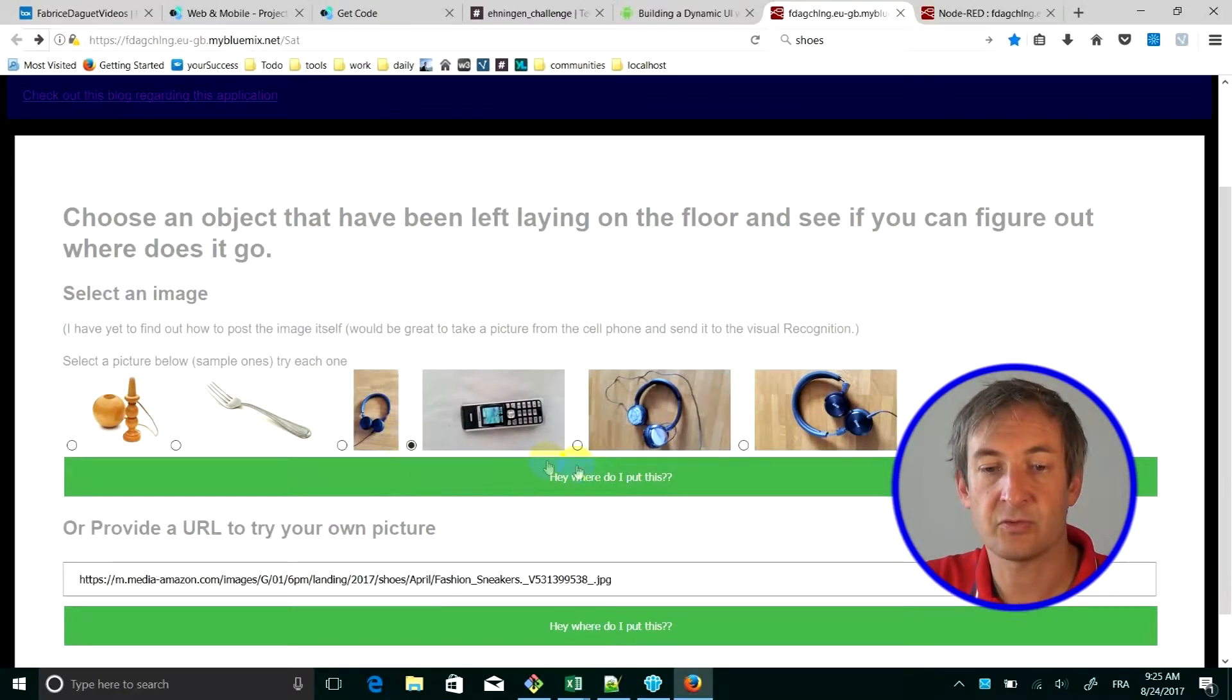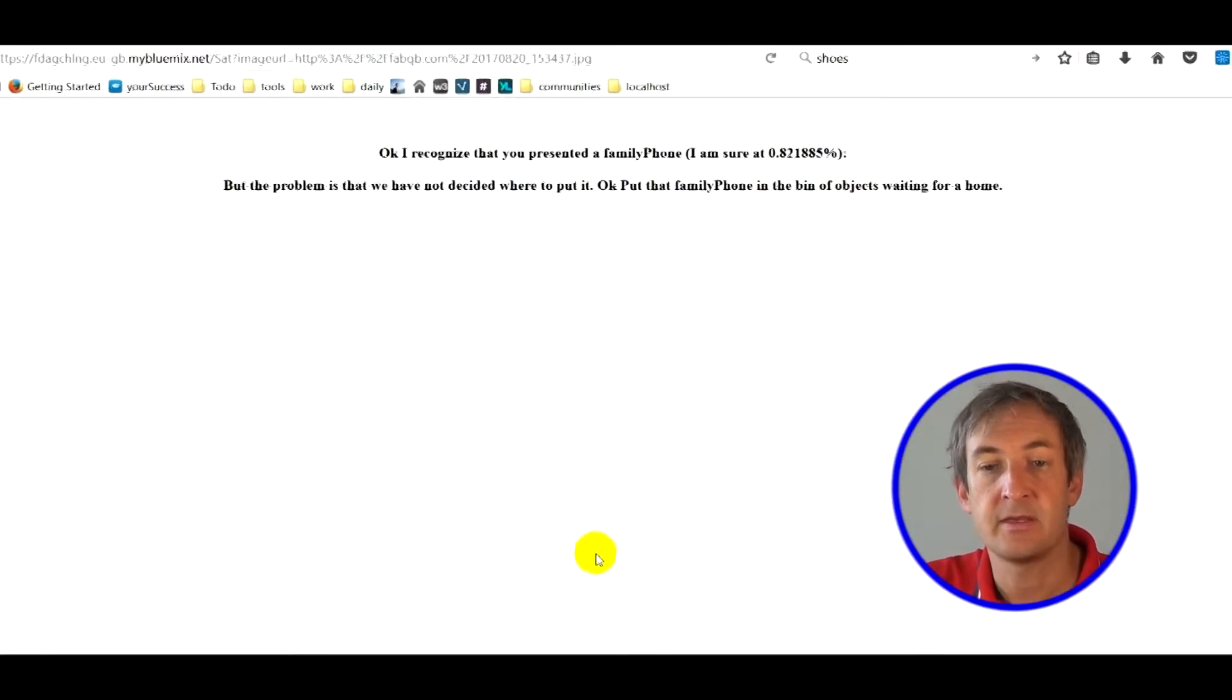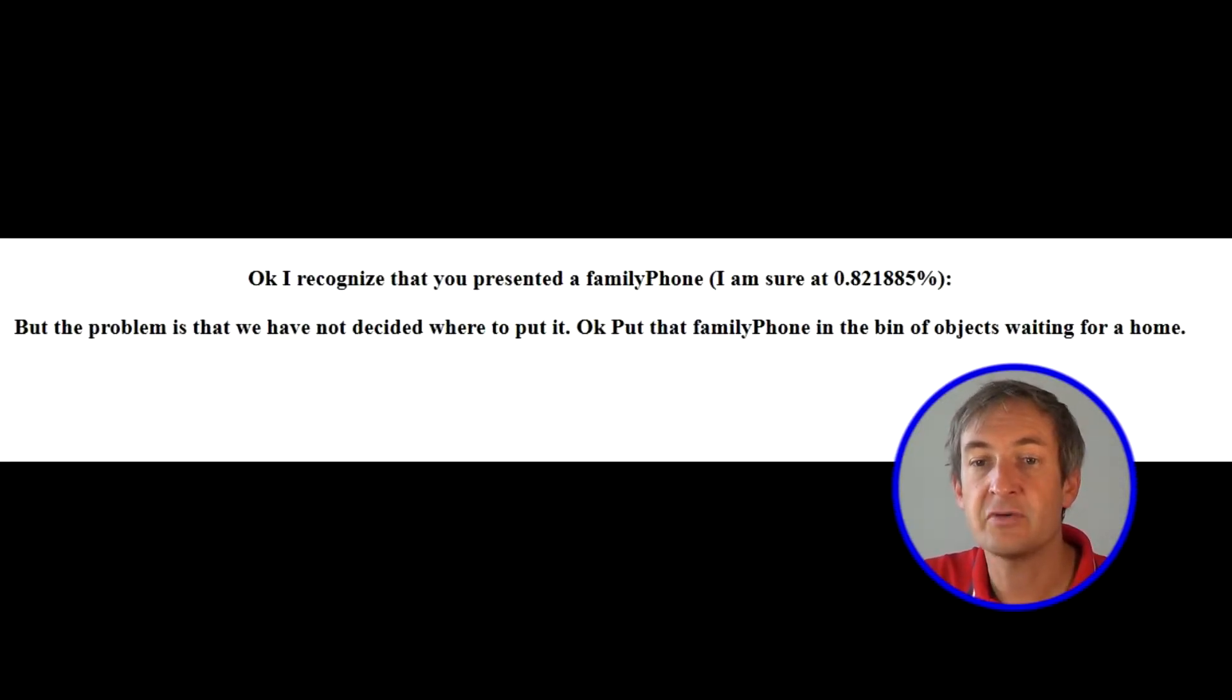Let's see, for example, that one. This is another one, another object that I own. This is the family phone, pretty sure, at 82%. However, we haven't really set up where it should go. So, we just say, okay, let's put it in the bin of objects waiting for a home. This way we decide where to put it.